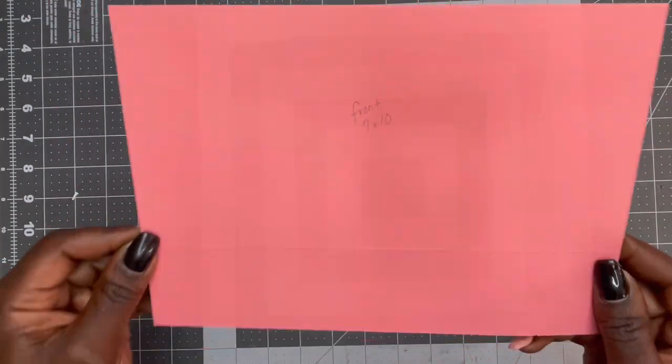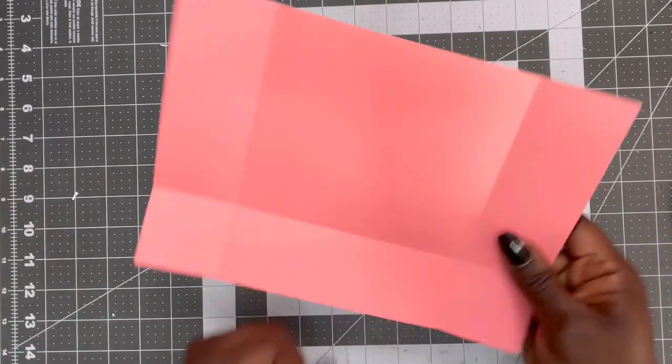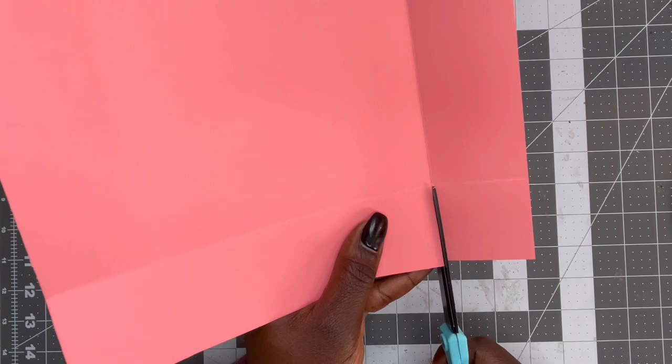Then when we're done with that, we're going to grab our front piece and again, we're going to fold on our square lines and with this one, we are going to completely remove the squares from this one.